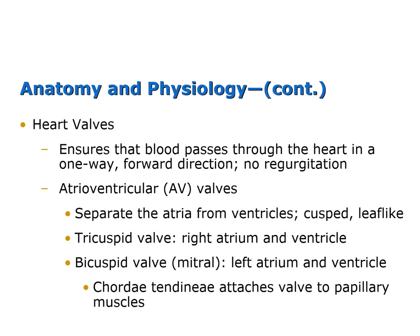Each valve has leaflets or cusps that anchor the valve to the heart wall with cords of fibrous tissue called chordae tendinae. The cusps of the valves act to maintain tight closure. The tricuspid valve has three cusps and the mitral valve has two. Each of the semilunar valves also has three cusps.